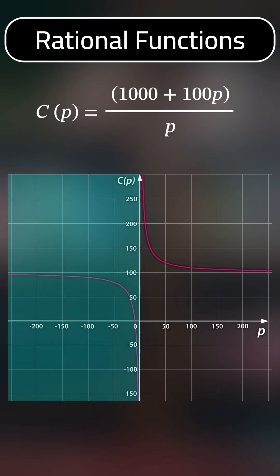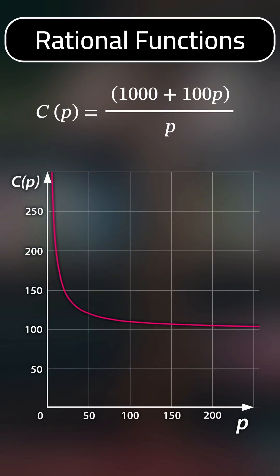Note that this function works for negative values, but we can't have negative numbers of people, so we need to restrict the domain.